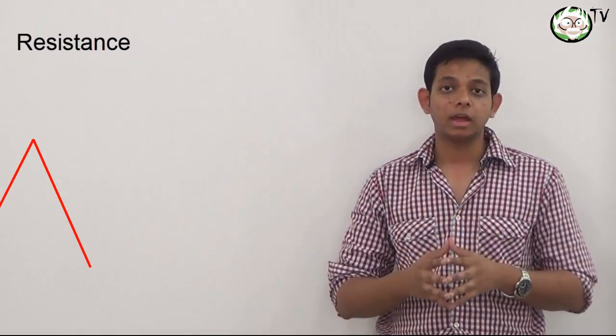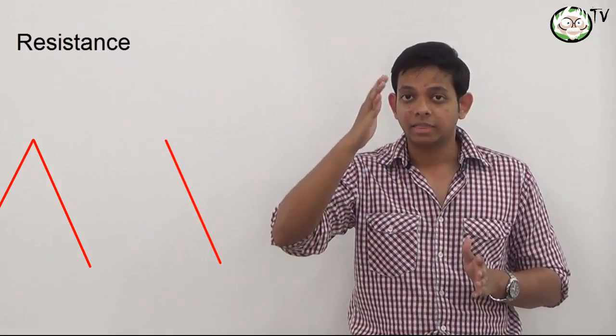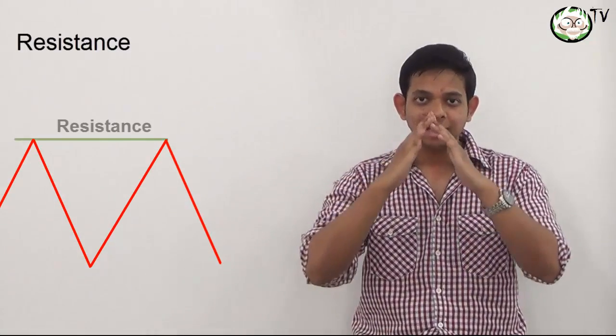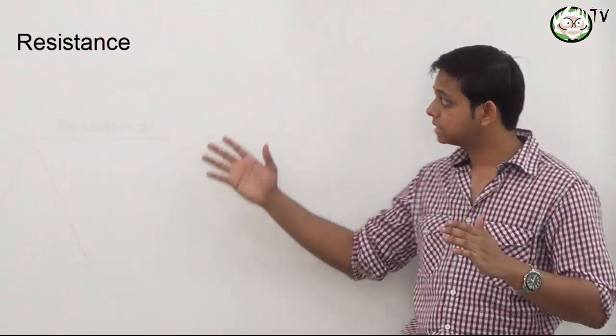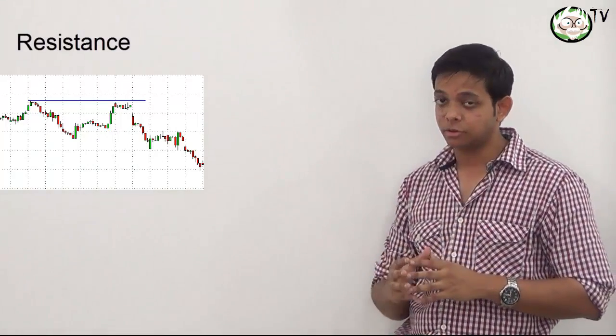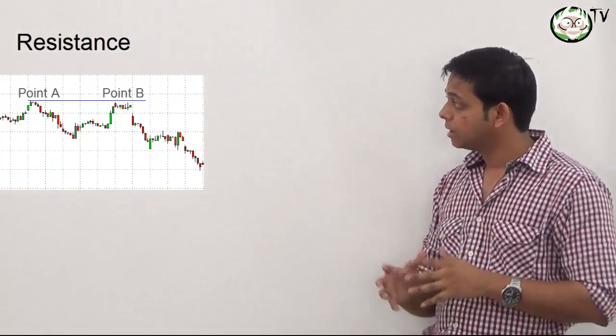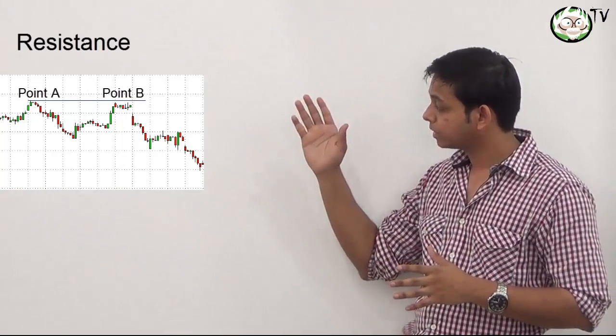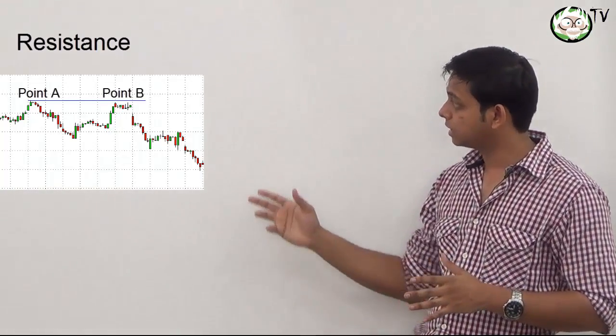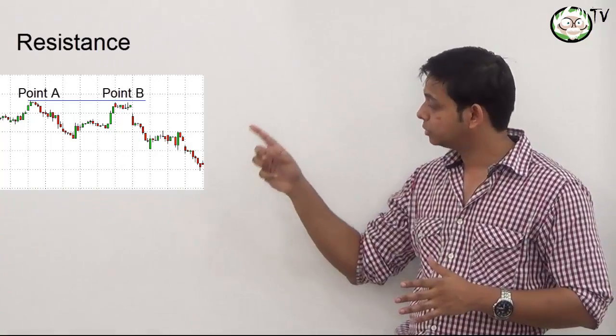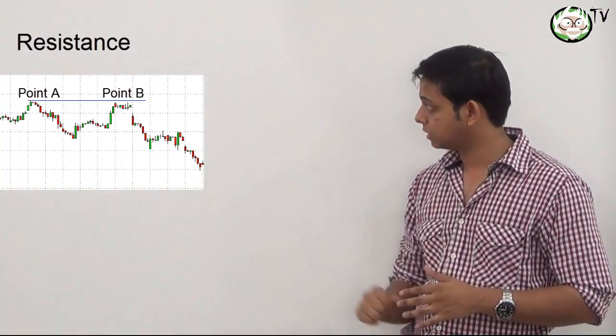Here's a quick overview of resistance. Resistance is basically the point where stocks rallied and then declined. That meeting point is your resistance. Here's an example of what a resistance looks like. If you notice, prices went up and then fell down, creating our point A which we marked with a blue horizontal line.